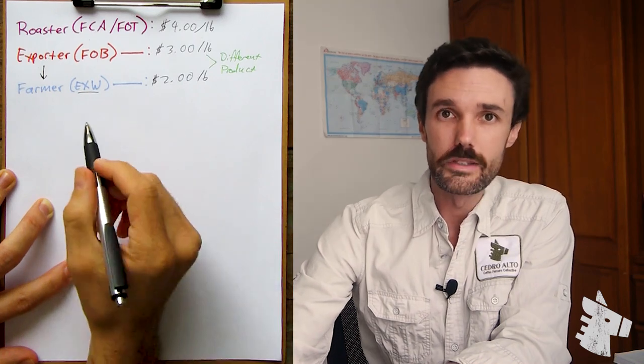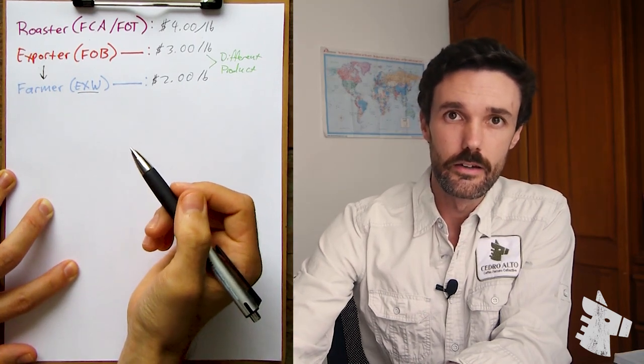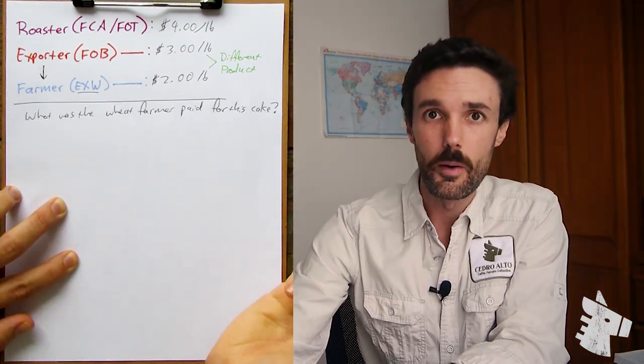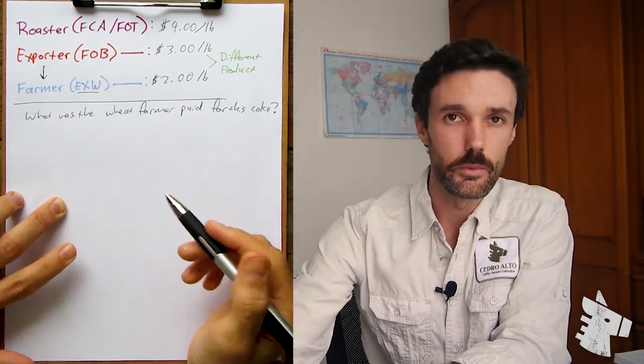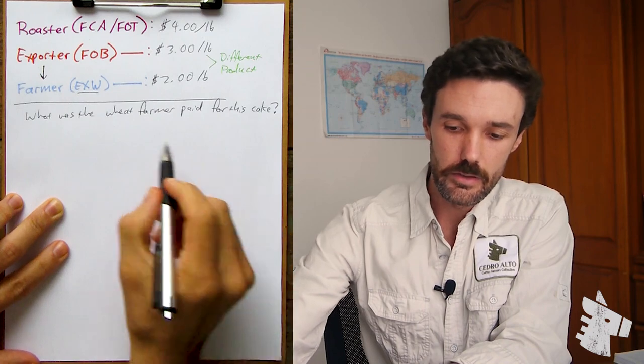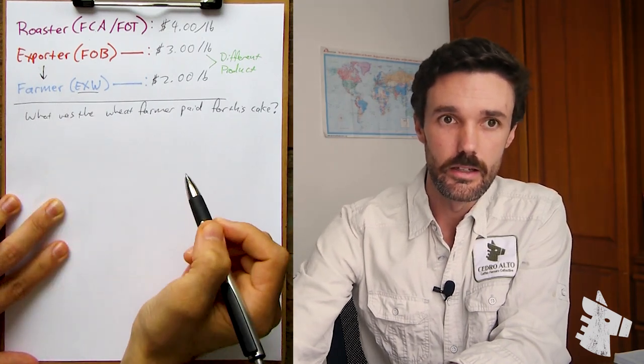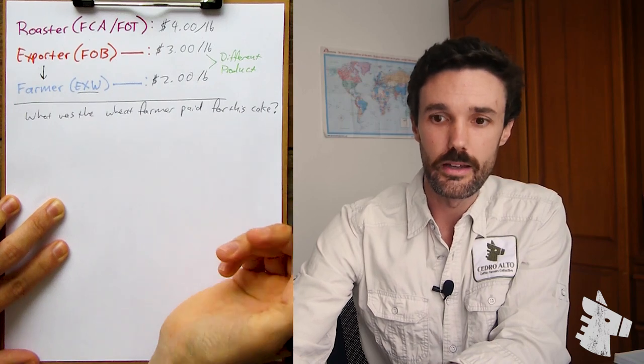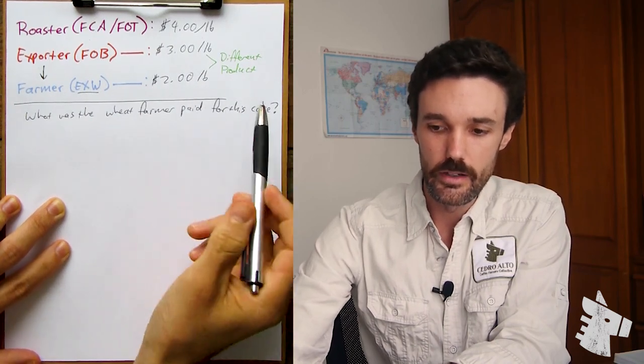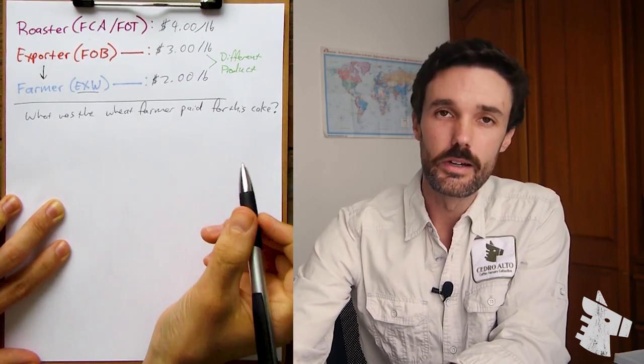This would be like saying, what was this wheat farmer paid for this cake? Although a wheat farmer didn't make a cake, a wheat farmer didn't sell a cake. So how can we say what the wheat farmer was paid for the cake? Inevitably, the farmer price, unless they're exporting, importing, and shipping off in a truck to a roaster, is going to be a derivative number.